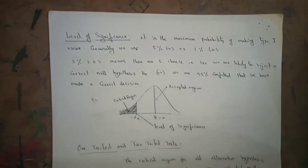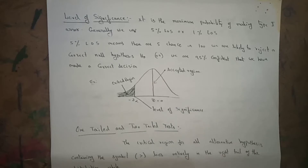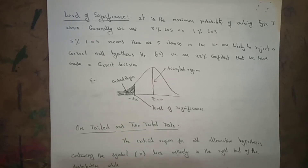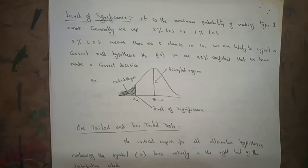Now, an important definition: level of significance (LOS). The level of significance is the maximum probability of making a Type I error. Generally we use 5% or 1% level of significance. In examinations, they will specify either 5% or 1%. If they do not specify anything, you have to take 5% by default.